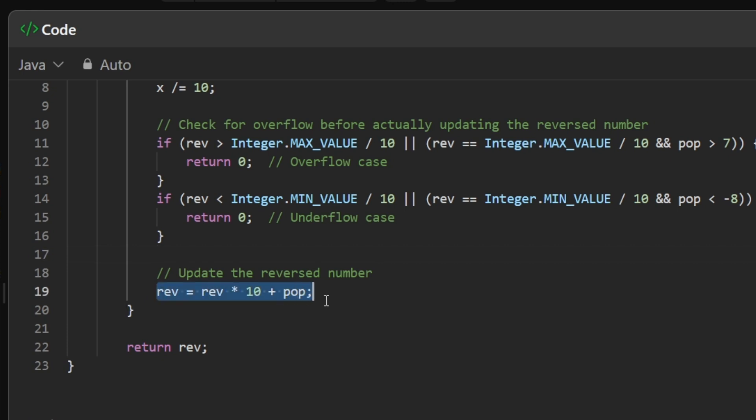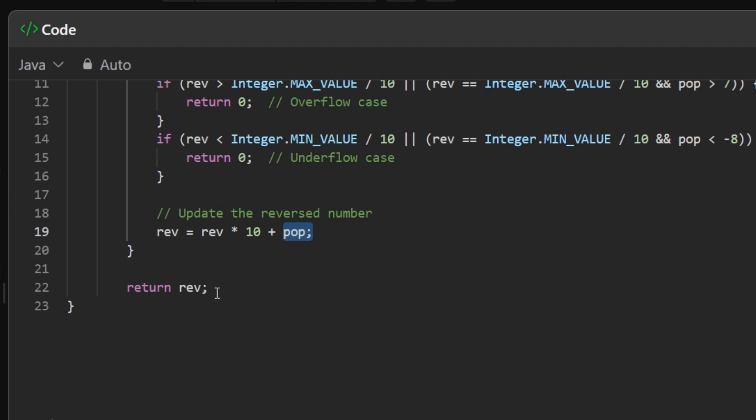If that is not the case, we simply add that value and update the existing reverse number by multiplying the current reverse number with 10 plus adding the pop value or the last value we added, and we can simply return the reverse value.